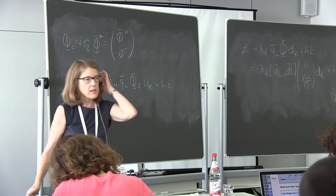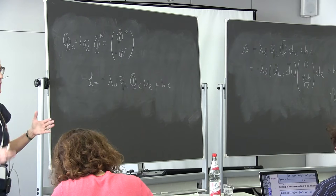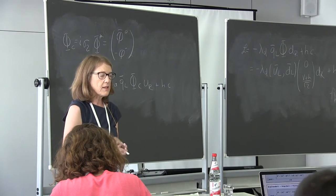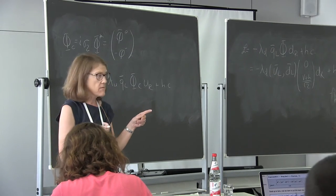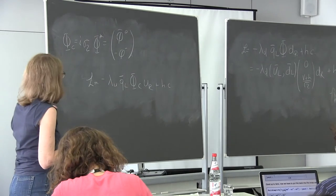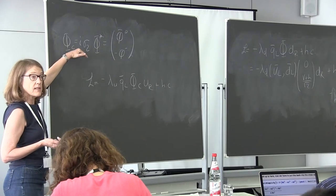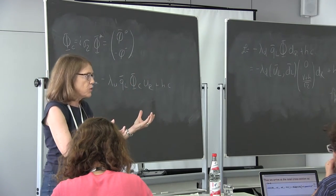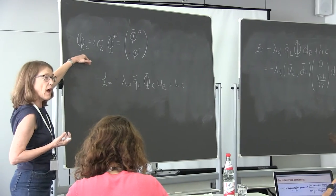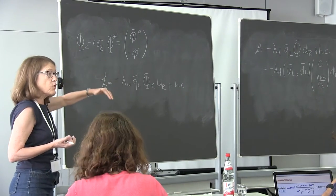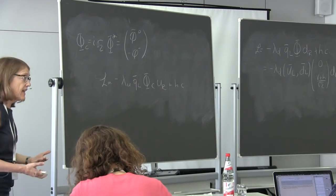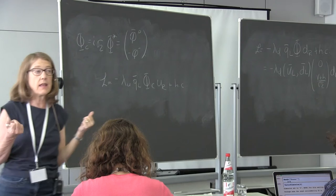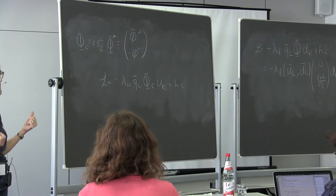This has really interesting consequences for supersymmetry. In SUSY, I'm not allowed to couple conjugates of superfields, so I must always introduce a second Higgs doublet to give mass to both up-type and down-type fermions. That's a basic statement of supersymmetric models: you always have at least two Higgs doublets.